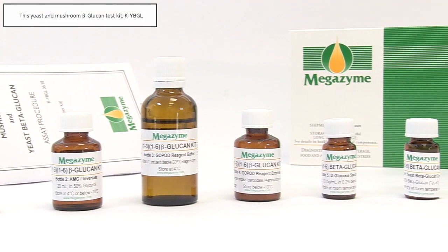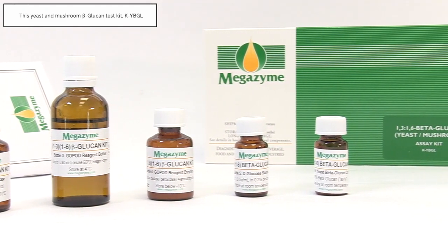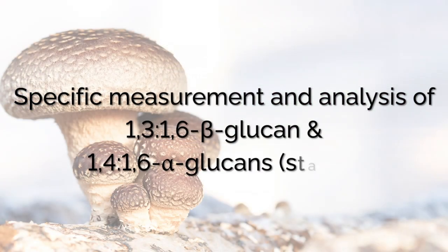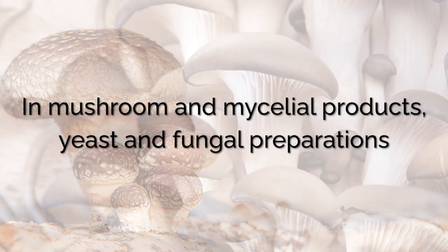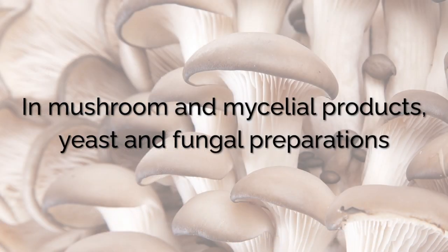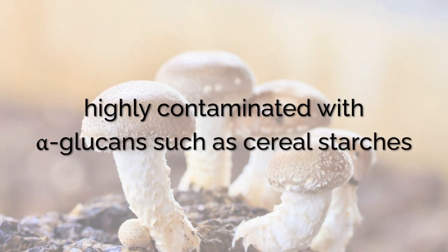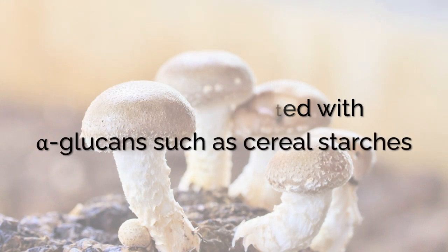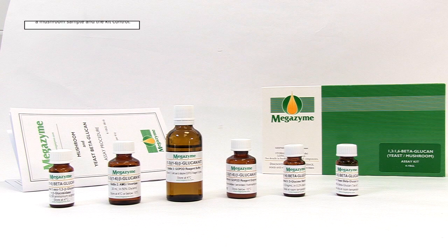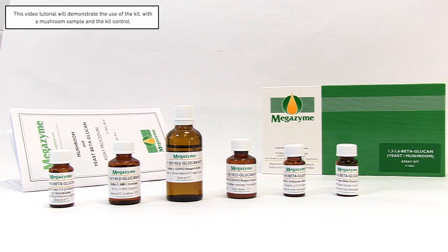This yeast and mushroom beta-glucan test kit, KYBGL, allows for the specific measurement and analysis of 1,3-1,6 beta-glucan and 1,4-1,6 alpha-glucan in mushroom and mycelial products, yeast and fungal preparations. The procedure readily allows the measurement of beta-glucan in mushroom products which are highly contaminated with alpha-glucans such as cereal starches. This video tutorial will demonstrate the use of the kit with a mushroom sample and the kit control.